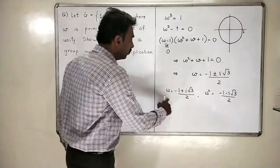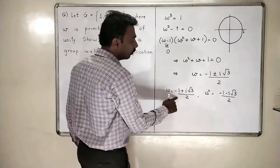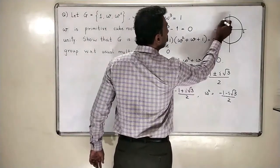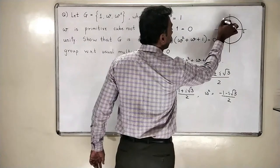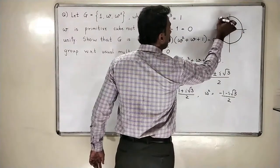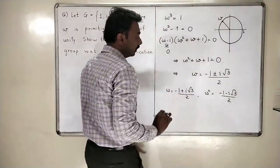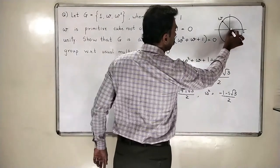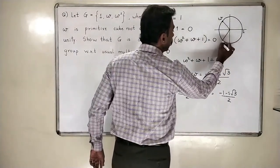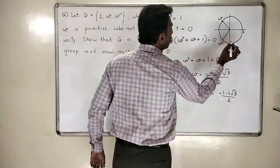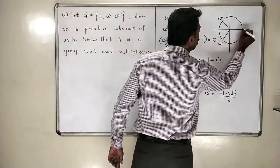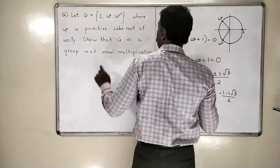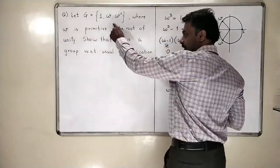If I plot this complex number, minus one plus i root three divided by two, this number is here at an angle of 120 degrees — so this is omega. And omega square, which is minus one minus i root three divided by two, is plotted here. So these are the three numbers: 1, omega, and omega square, which are the elements of G.